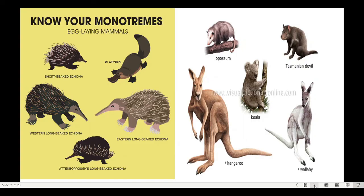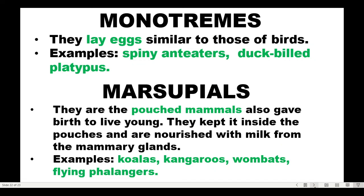Monotremes lay eggs similar to birds. Examples are spiny anteaters (echidna) and the duck-billed platypus. Marsupials are pouch mammals — they give birth to live young but keep them inside pouches, nourished with milk from the mother's mammary glands. Examples are koalas, kangaroos, wombats, and wallabies.